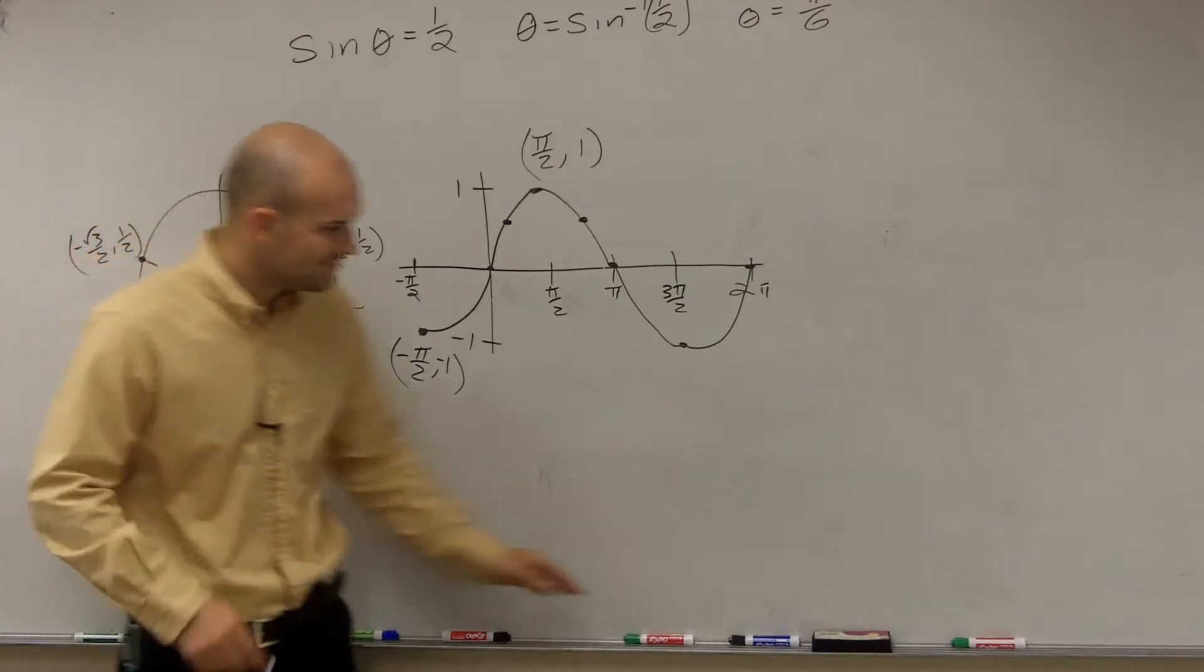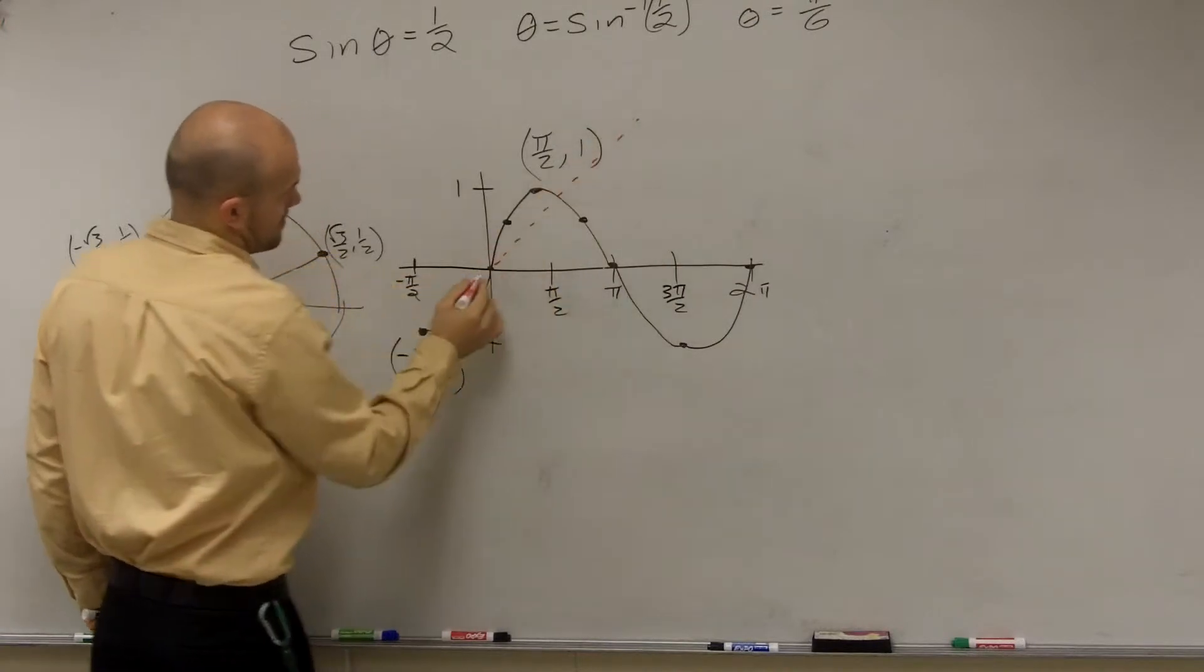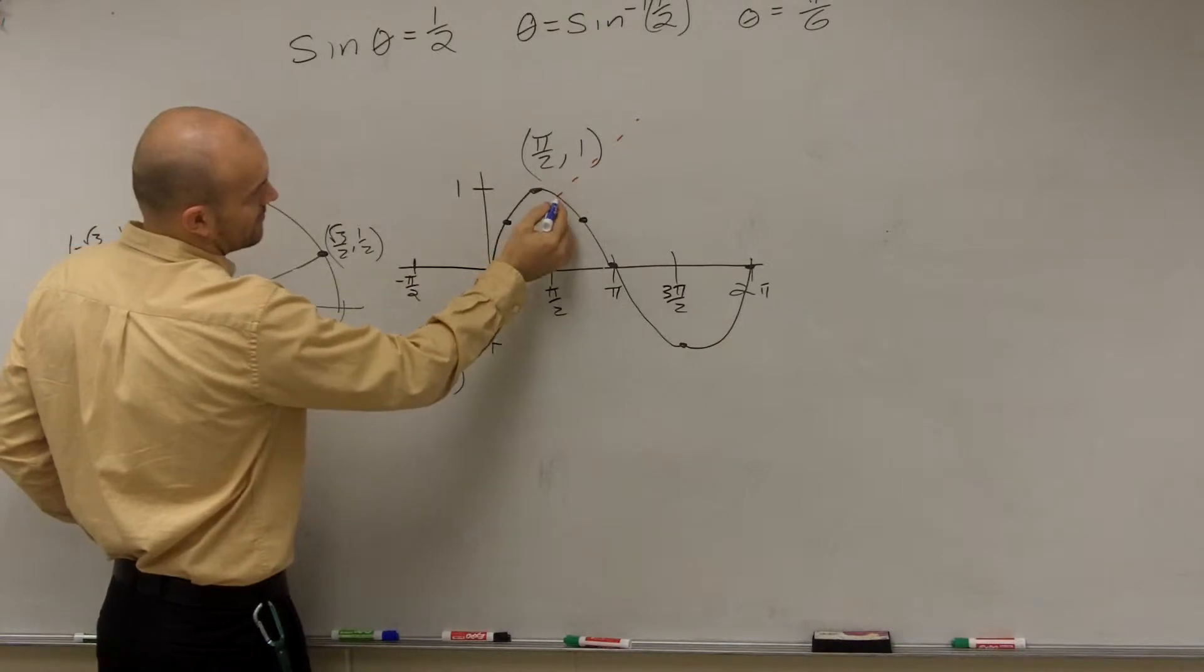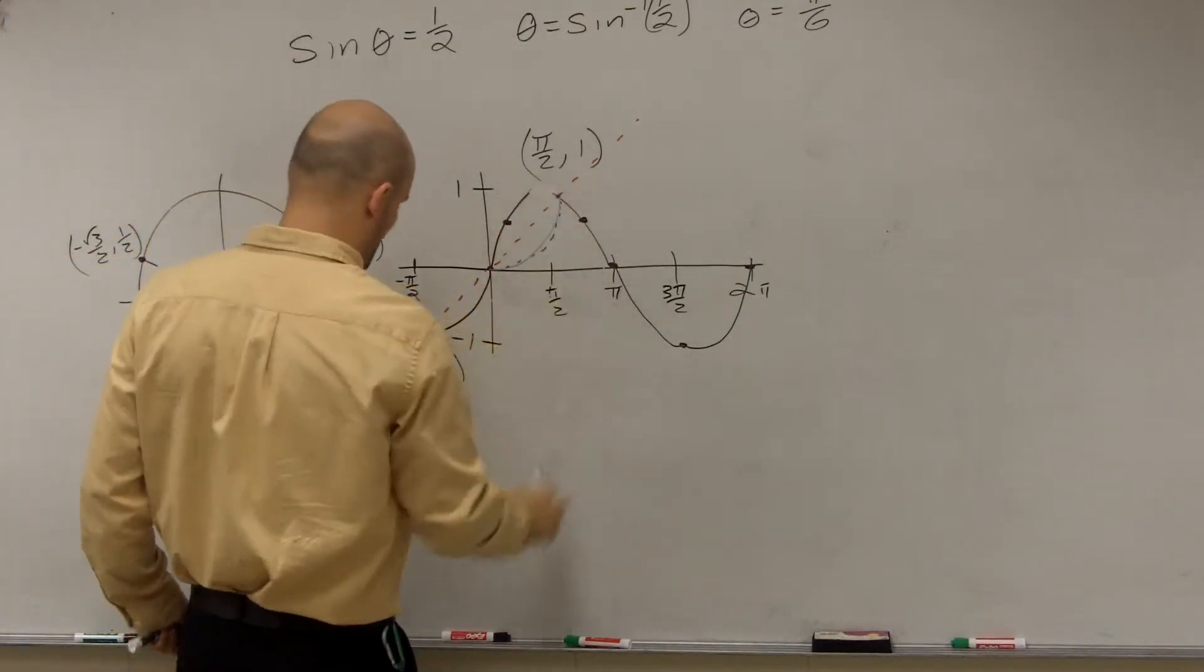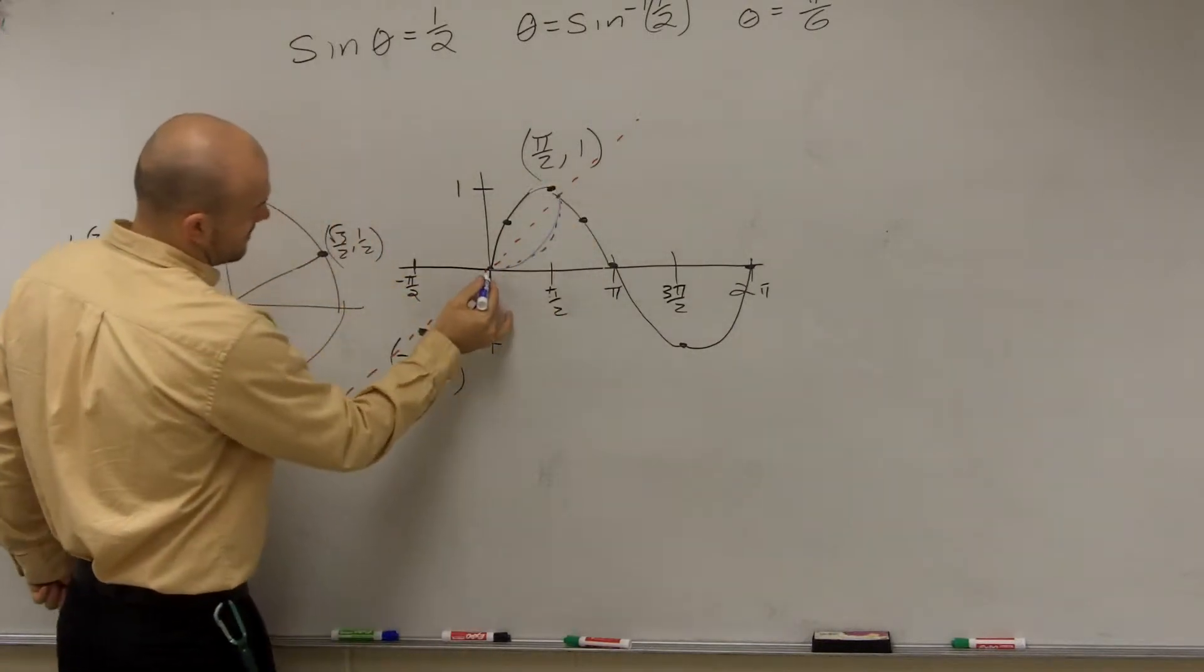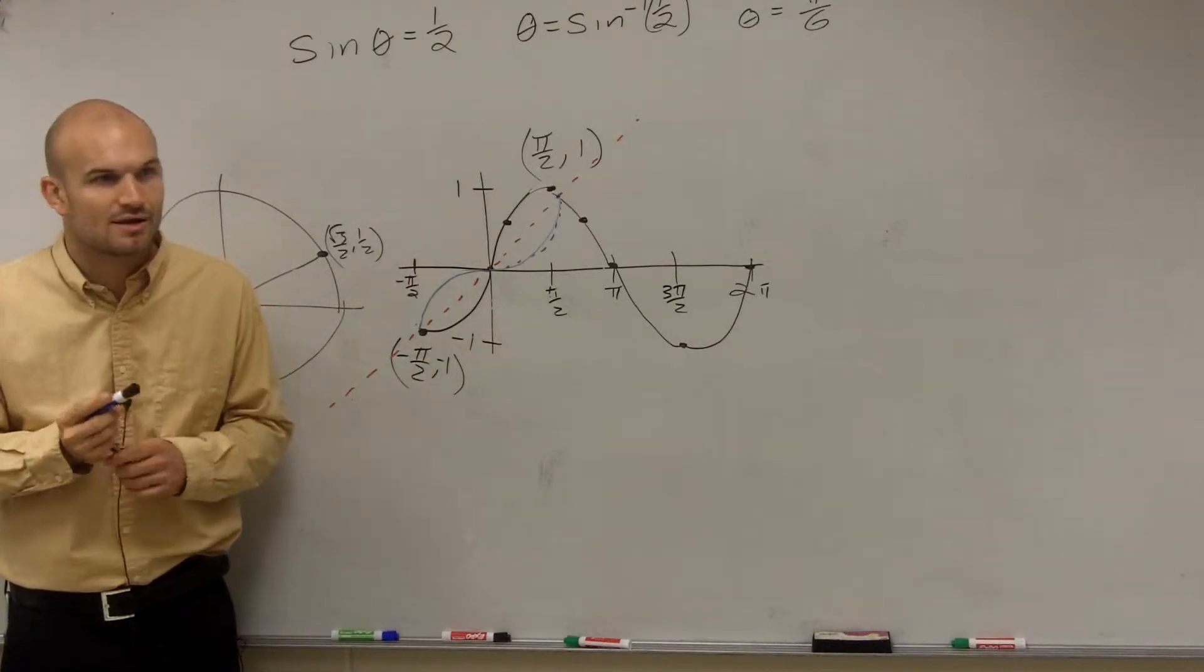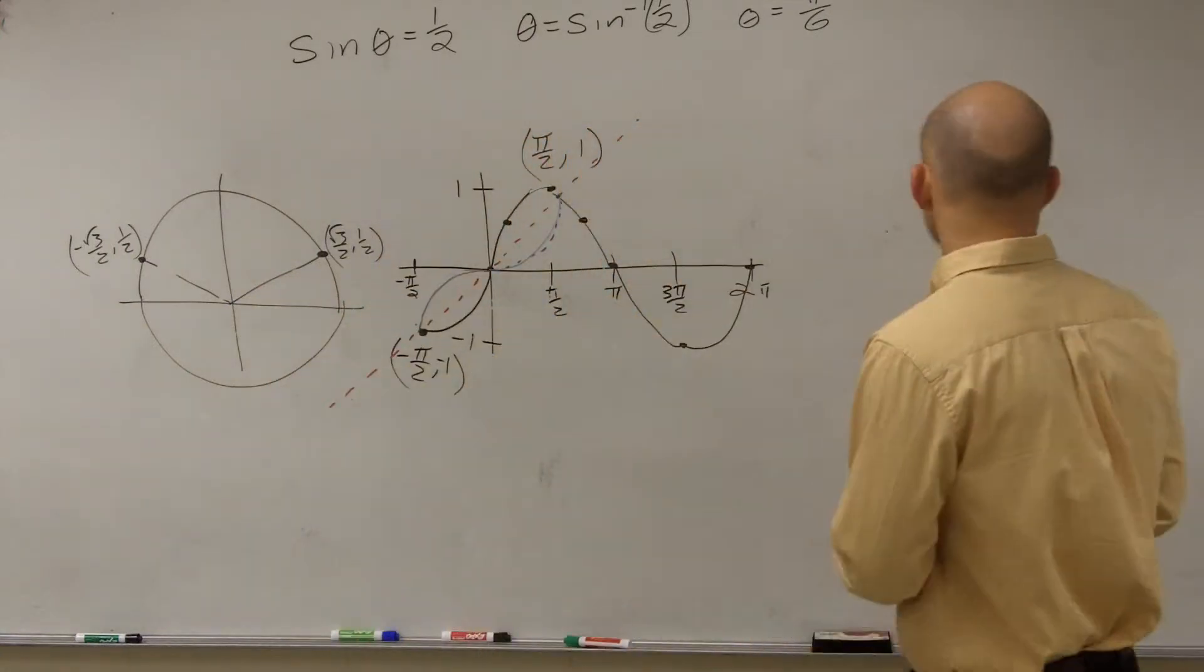To find the inverse, you're going to reflect it over the xy line. To reflect something over the xy line is as simple as taking what's over it and reflecting it over. Do you see how the blue line is a reflection of the black line over the dotted red line?